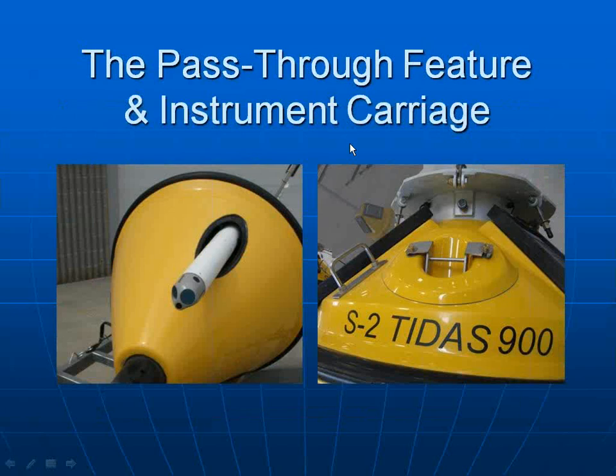One particular client has an RBR temperature string logger mounted in one of the pass-throughs. We also have what we call an instrument carriage option that can be adapted to a variety of surface instrumentation. It consists of a white tube currently housing a NORTEK ADCP. From the top of the buoy the instrument carriage lifts out, with a conveniently located cable outlet to plug into the main buoy body. There's also a toggle bolt that swings out of the way for releasing the top of the electronics housing and breaking down the buoy into its subcomponents.